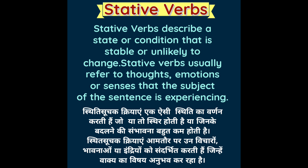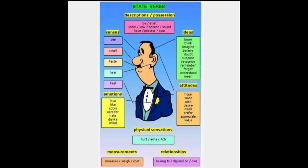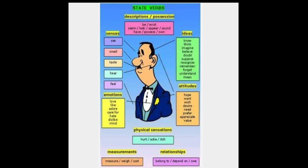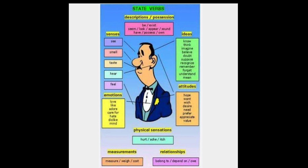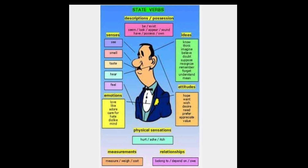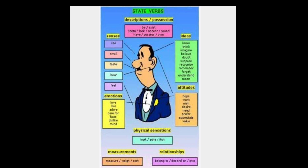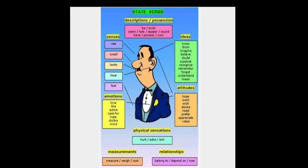Stative Verbs generally action verbs ke opposite hoti hain. Chaliye ab picture ke madhyam se samajhte hain Stative Verbs ko. As you can see in this picture, there are some Stative Verbs. Some Stative Verbs show description or position, like: be, exist, seem, look, etc. Some Stative Verbs show senses like: see.